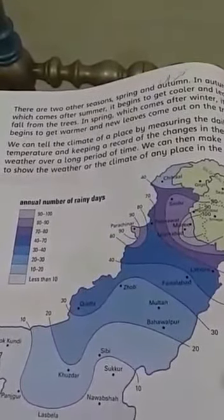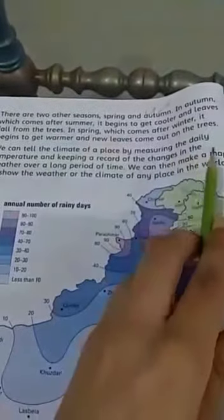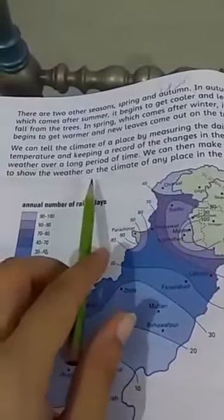In autumn all the leaves fall down, and in spring all new leaves come out. We can tell the climate of a place by measuring the daily temperature and keeping a record of changes in the weather over a long period of time. We can then make a map to show the weather or climate of any place in the world.